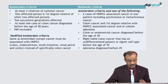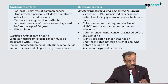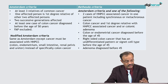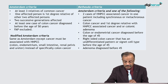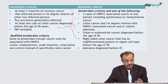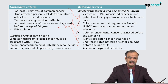The modified Amsterdam criteria is the same as the original except that the cancer must be associated with HNPCC-spectrum cancers including colon, endometrium, small intestine, renal pelvis, or ureter. The Bethesda criteria includes two cases of HNPCC-associated cancer in one patient including synchronous or metachronous colon cancer, plus a first-degree relative with cancer, or colonic adenoma or endometrial cancer diagnosed before age 45, or right-sided colon cancer with signet cell type before age 45, or adenoma diagnosed before age 45.